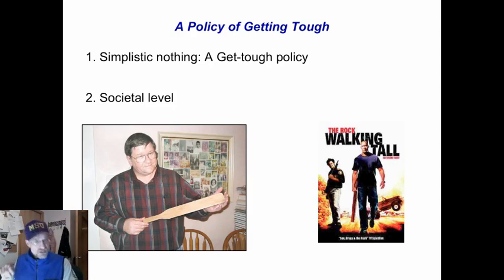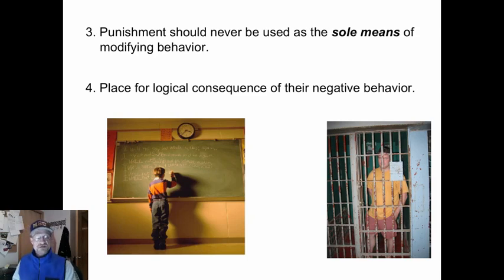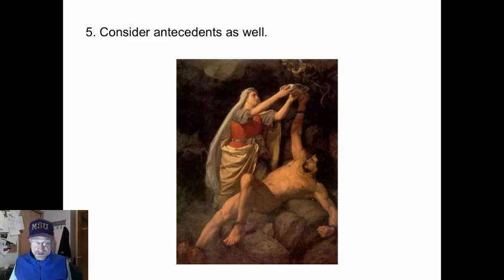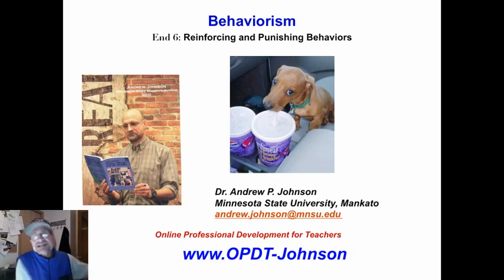Whether you're dealing with human beings or mice, simply getting tough or making something bad happen is not effective because the organism simply learns to avoid the bad thing. It should never be used as the sole means of behavior modification. There is a place for logical consequences of negative behavior, but you need to consider the antecedents as well. When looking at behavior in your classroom, seek to understand the conditions that caused the behavior. Too often in classrooms we deal only with behavior, especially with EBD students — we don't deal with the emotion part, which is the antecedent. If you're a true behaviorist, you look to see the antecedent: what is causing the behavior.